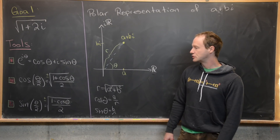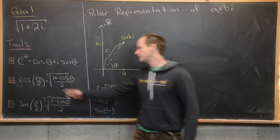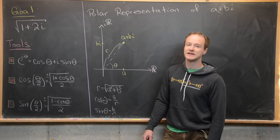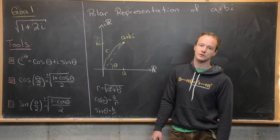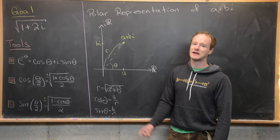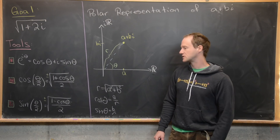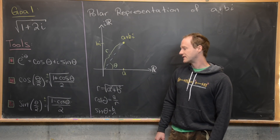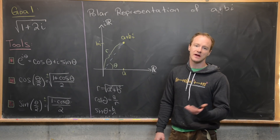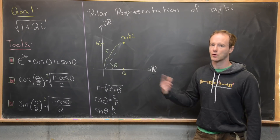The other two formulas we need are the half-angle formulas for cosine and sine. Cosine of theta over 2 is plus or minus the square root of (1 plus cosine theta) over 2, where you take the plus or minus depending on which quadrant you are in. Similarly, sine of theta over 2 equals plus or minus the square root of (1 minus cosine theta) over 2, and again the plus or minus depends on which quadrant you're in.